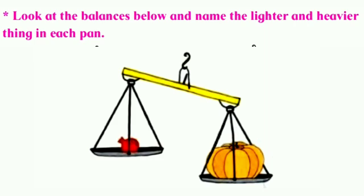Now let us see what is given in the textbook. The question says: look at the balances below and name the lighter and heavier thing in each pan. As you can see in the image, one side of the pan has a pumpkin and on the other side it has a pomegranate.